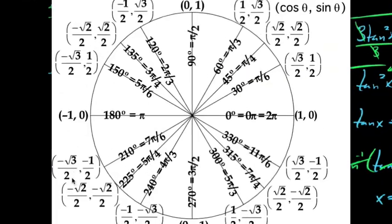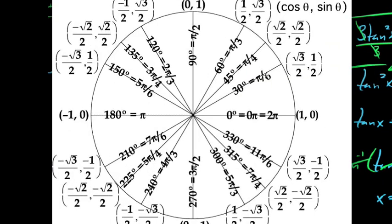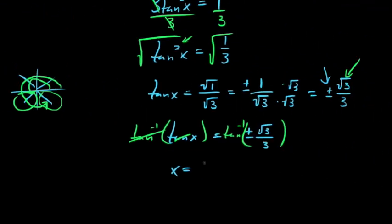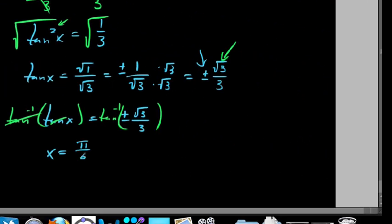We say, what angles could we take the tangent of and get radical 3 over 3? And if you know anything about your unit circle, we say radical 3 over 3 with tangent values occurs at, say, π/6, π/6 here. But we said, oh, positive or negative radical 3 over 3. So not just π/6, but it could be π/6. It could be actually 5π/6. It could be 7π/6 or 11π/6. So we've got a lot of these in this case. We say π/6, 5π/6. We also have 7π/6 and 11π/6.